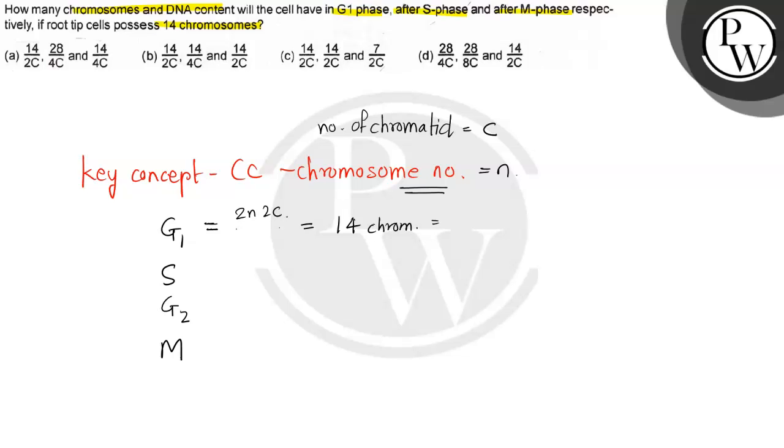What happens if there are options here? This is not division. When they have mentioned 14 chromosomes and the number of chromatids is mentioned, somewhere they have given 4C, 2C, 8C like that.